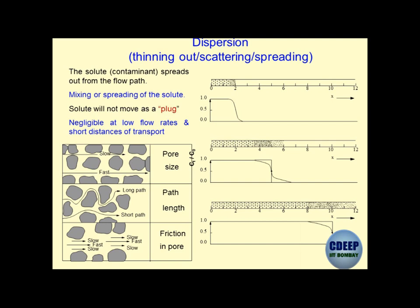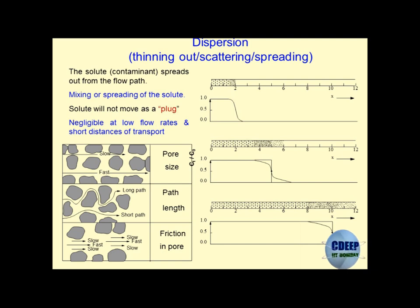Think of a crowd that disperses because of intervention by police - the meaning is that the moment something came, this crowd dispersed. This is a different mechanism altogether. Until now we have talked about two mechanisms of contaminant transport: one is advection, which is convection, and the second was diffusion. Now the third one is dispersion.